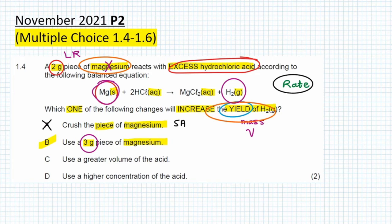Since some of you may have selected C or D, I'm going to explain why those options are incorrect. C says use a greater volume of acid. Yes, if we use a greater volume we may have more acid, but the problem is that the acid is already in excess. So adding more of a substance that is already in excess is not going to lead to more product.